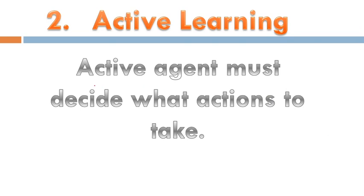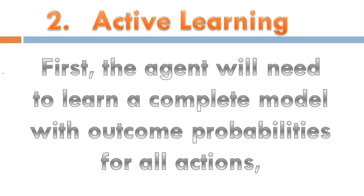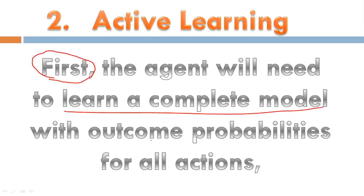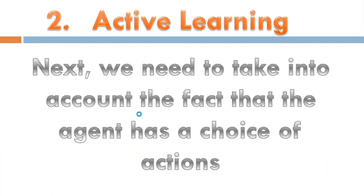In active reinforcement learning, the agent actively participates and must decide what actions to take. Firstly, the agent needs to learn the complete model of the environment — what are the outcomes, what are the probabilities for outcomes for all actions, and what are the different states available.